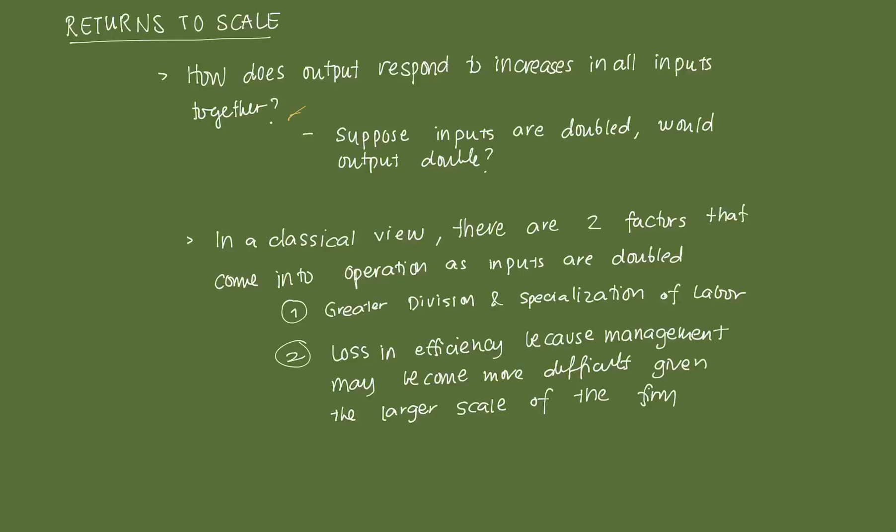The concept of returns to scale has been of interest to economists since the time of Adam Smith. In the classical view pioneered by Adam Smith, there are two main factors that come into operation as inputs are doubled. First, he said that when you start to increase inputs, there's going to be greater division and specialization in labor. If you increase labor and capital by a large proportion, certain labor units will pool — you'll have different departments handling very specialized tasks, and since labor is able to specialize, they can increase their productivity in that part of the production process.